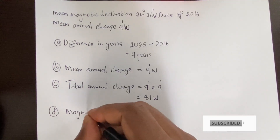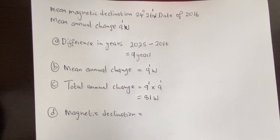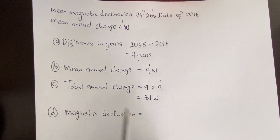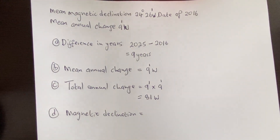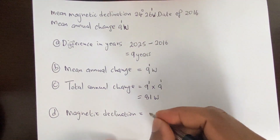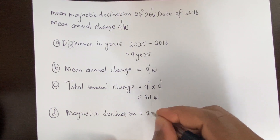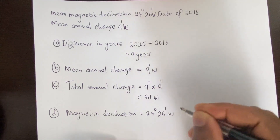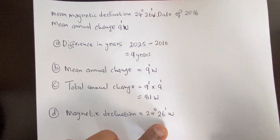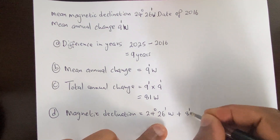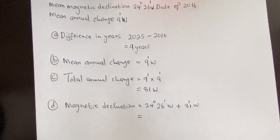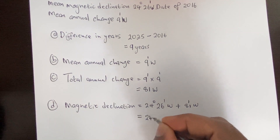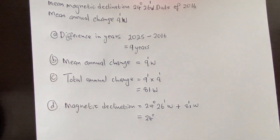Step D: Calculate the total magnetic declination. We call it 'total' because the question asks for magnetic declination, not just the mean. To find it, we take the mean magnetic declination — 24 degrees 26 minutes west — and add 81 minutes westward, since the directions are the same.